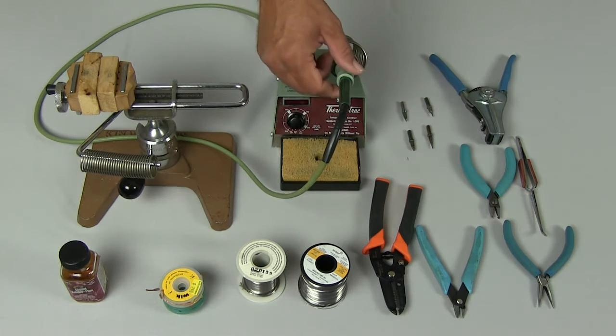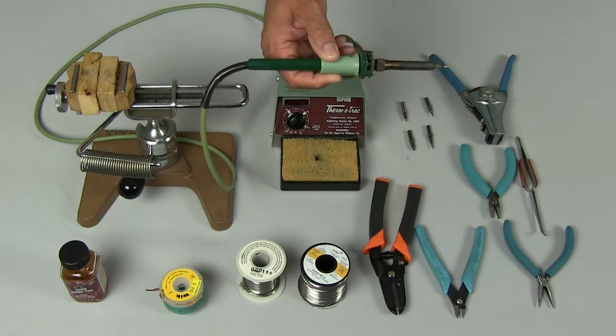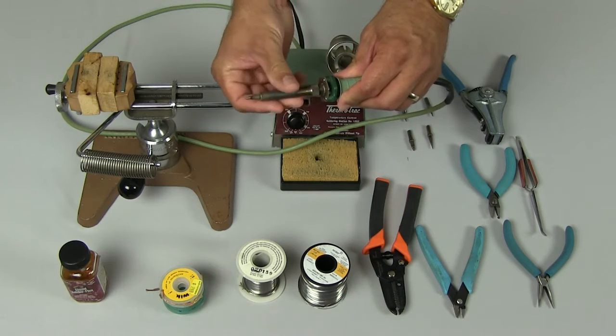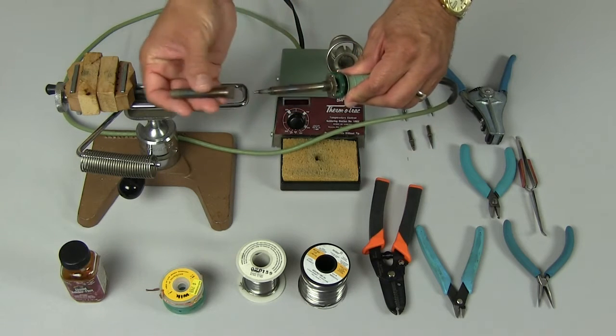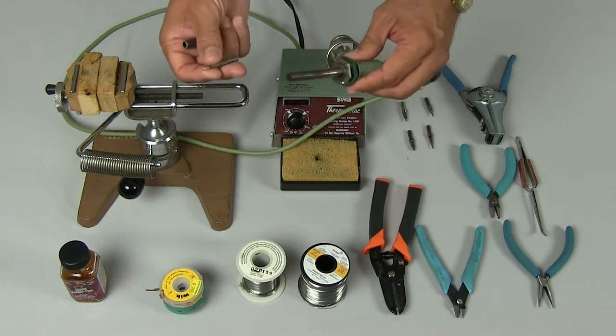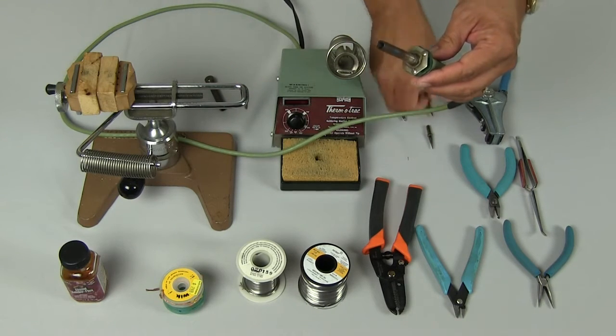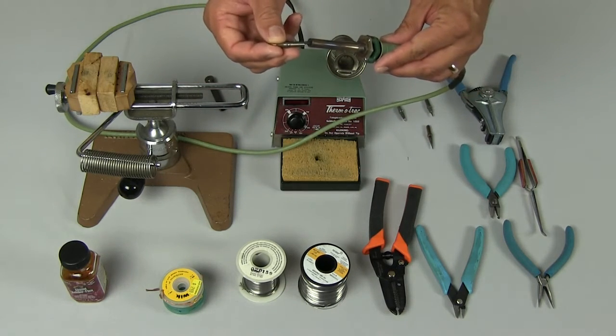Another important feature of the solder iron is to have adjustable interchangeable tips. In this case, we're going to remove the barrel and the tip, and we can replace the tip with the size tip that we need for our work.